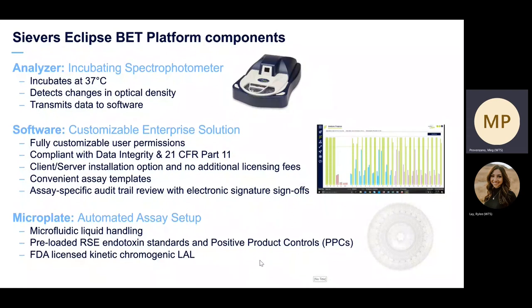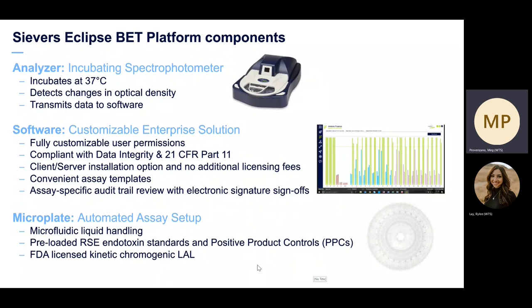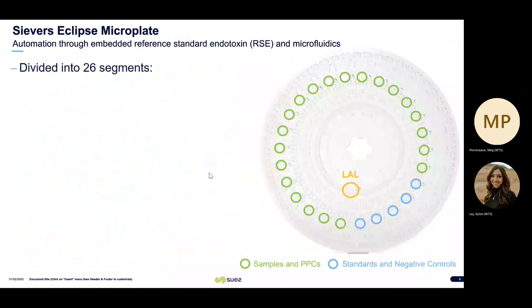There are also convenient assay templates. The microplate is a microfluidic liquid handling plate pre-loaded with RSE endotoxin standards and positive product controls. It can also use the FDA-licensed kinetic chromogenic LAL. The microplate allows for precise measurement, distribution, and mixing of samples, standards, and LAL. There's a one-to-one sample-to-lysate ratio, which maintains the same biochemistry as traditional microplate readers.